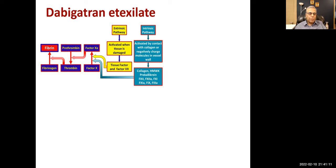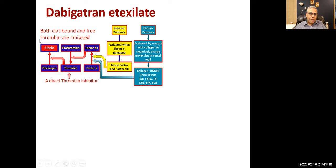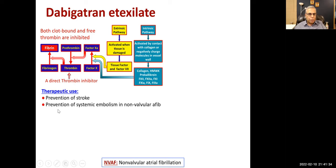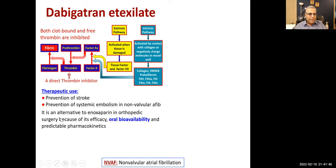Dabigatran is one NOAC with a specific property — it is a direct thrombin inhibitor. It inhibits both clot-bound and free thrombin, stopping expansion of the clot very effectively. Therapeutic uses: prevention of stroke and systemic embolism in non-valvular atrial fibrillation (NVAF), and an alternative to enoxaparin in orthopedic surgery. It has oral bioavailability and predictable pharmacokinetics. All other drugs in this group inactivate factor Xa; dabigatran is the only one inhibiting thrombin.